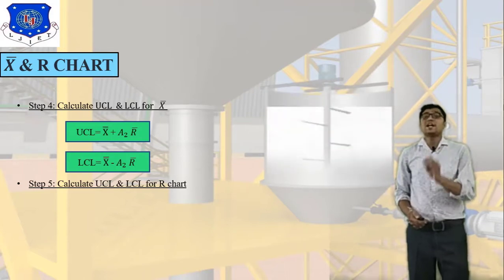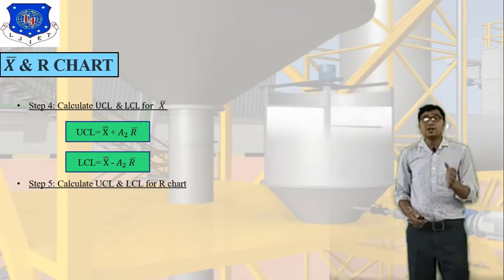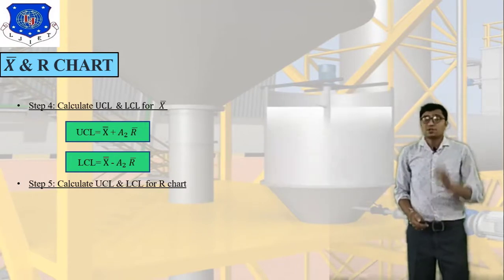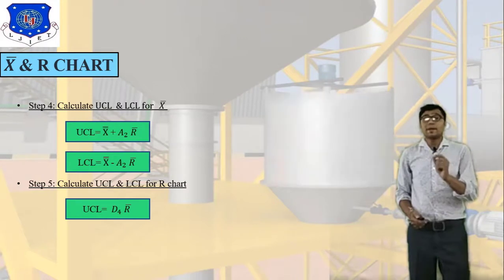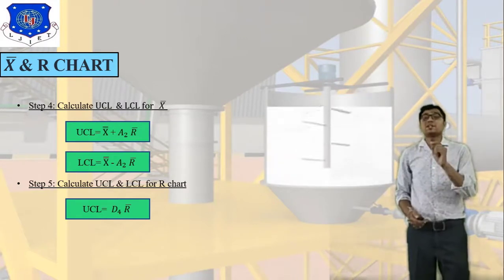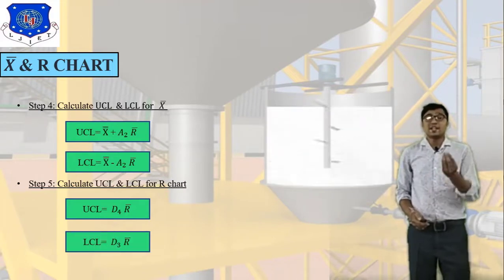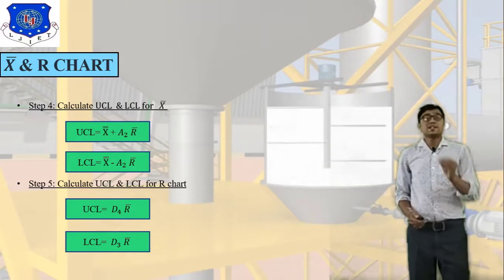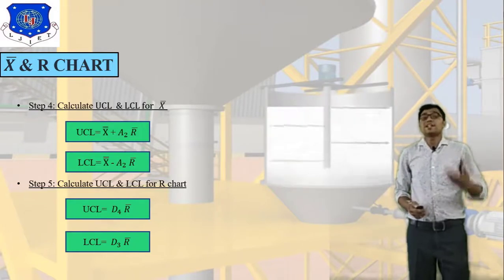Step 5: calculate UCL and LCL for the R chart. UCL = D4 × R-bar, where D4 is a constant given in the numerical problem. LCL = D3 × R-bar, where D3 is also a constant given in the numerical. Following these five steps, you can easily calculate X-bar and R chart.